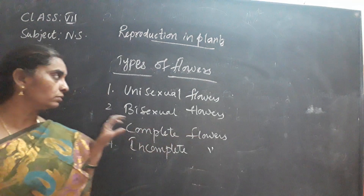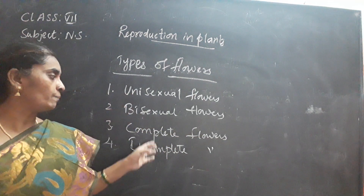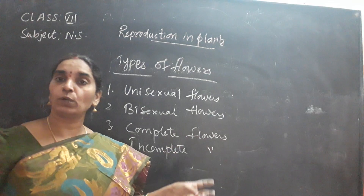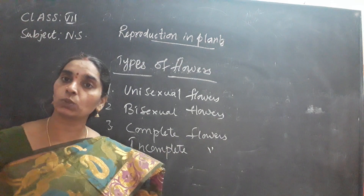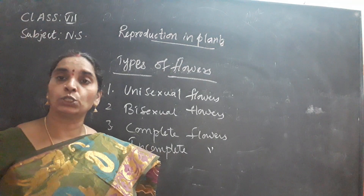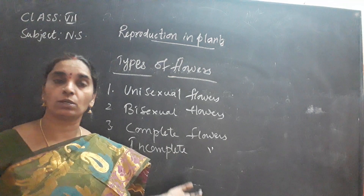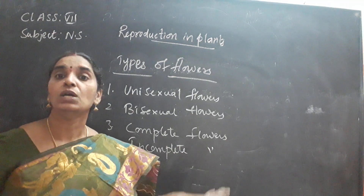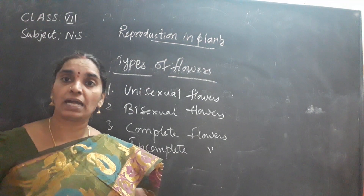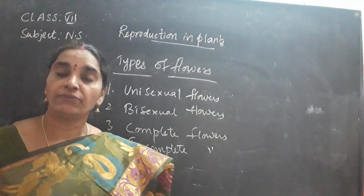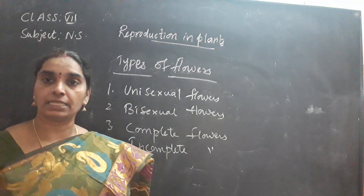Complete flowers contain all four whorls: calyx, corolla, androecium, and gynoecium. Incomplete flowers are missing any one of these four whorls. Examples of complete flowers are Hibiscus and Datura. Incomplete flowers include cucumber, papaya, bitter gourd, and bottle gourd — these belong to the gourd family and contain separate male flowers and female flowers, making them unisexual flowers.